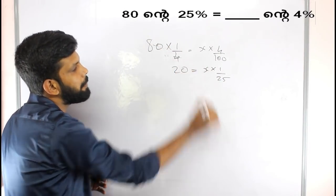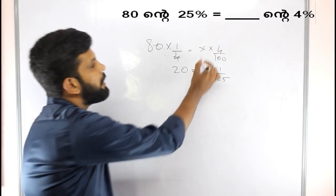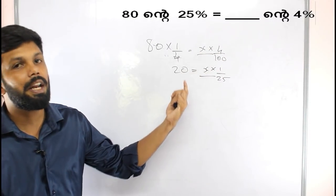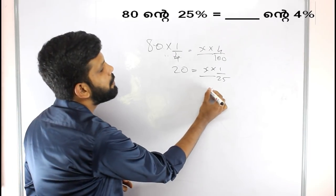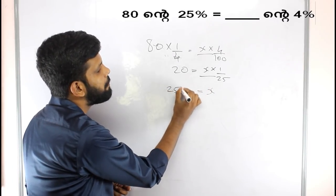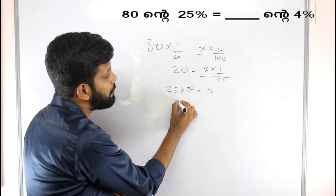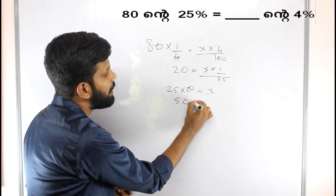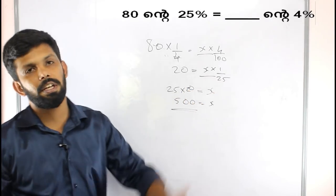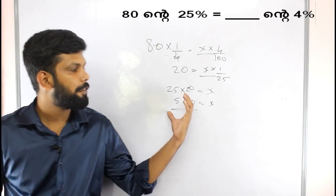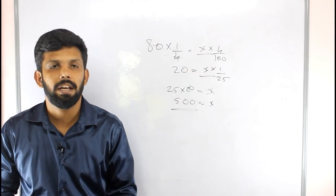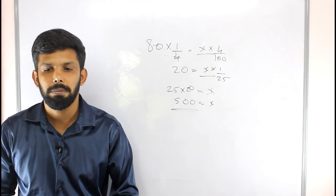Let's take a look at the value of x. We have x here. We multiply 25 into 30 to get 500, and 25 into 25 also gives 500. So we multiply to get the value of x.